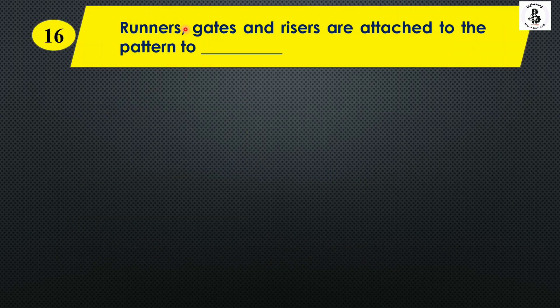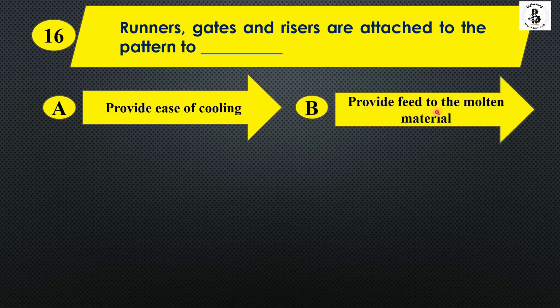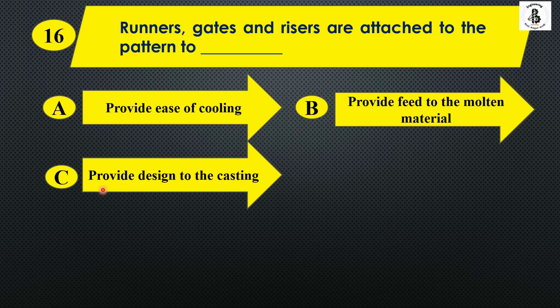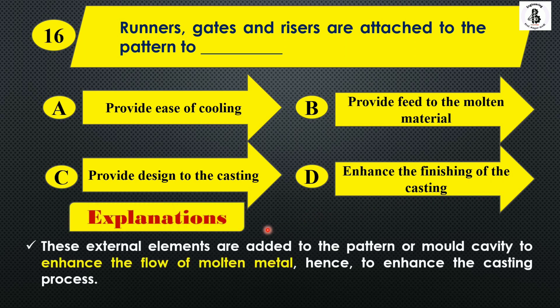Runners, guides and risers are attached to the pattern to: Option A: provide ease of cooling, Option B: provide feed to the molten material, Option C: provide design to the casting, and Option D: enhance the finishing of the castings. These external elements are added to the pattern or mold cavity to enhance the flow of the molten material. So the right answer is Option B, provide feed to the molten materials.